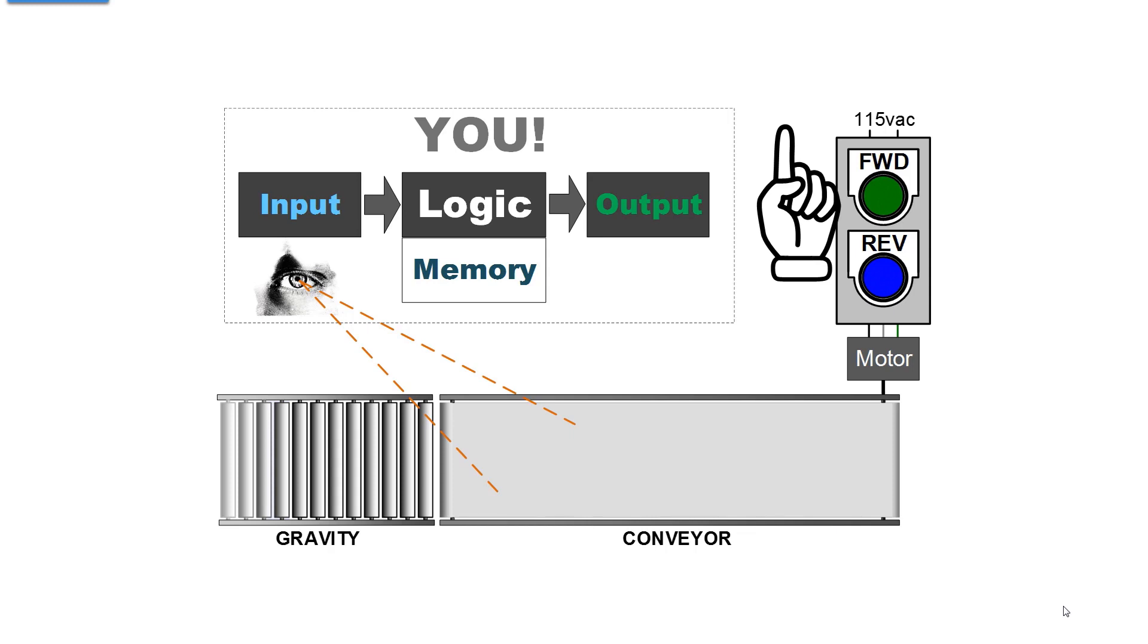You have a forward and reverse momentary push button to run the conveyor. Reverse is there just in case you aren't paying close enough attention and you have to back it up. You observe a carton rolling down and resting against the de-energized leading edge of the belt conveyor. You focus your eyes on the spot on the conveyor where you want the carton to come to rest, and you press the forward button. When it comes to rest, you stop.